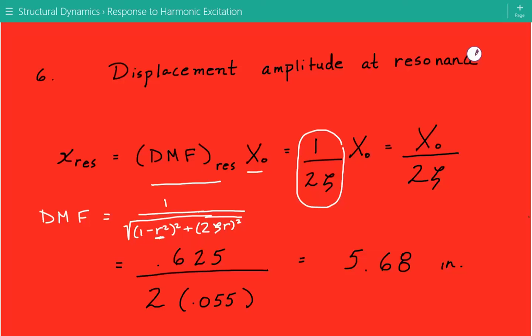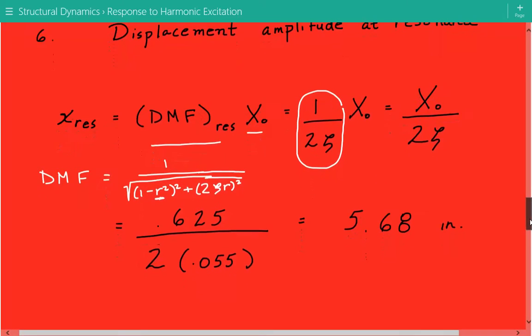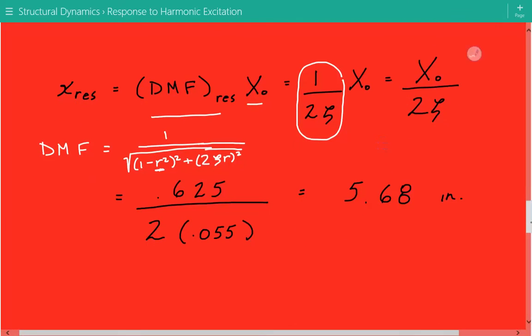So our displacement amplitude equals X₀ divided by 2ζ, and we get our displacement amplitude equals 5.68 inches.